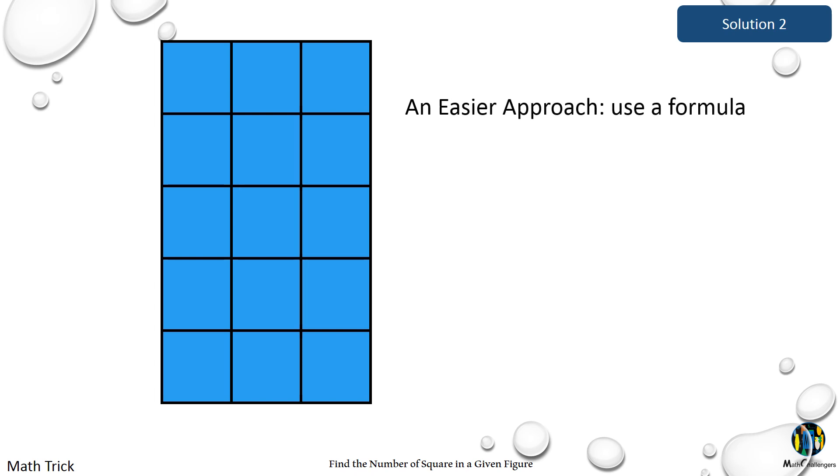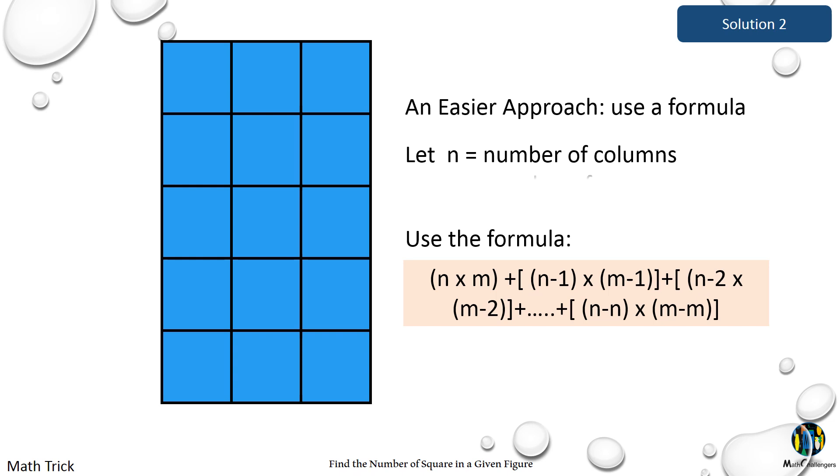Another way of finding the number of squares is to use a formula. Let us assume that n is the number of columns, m is the number of rows.